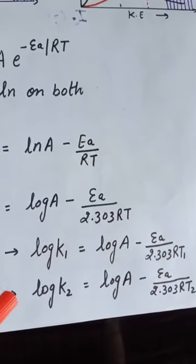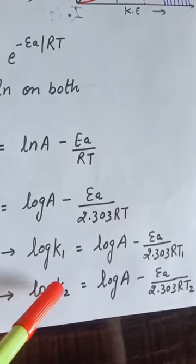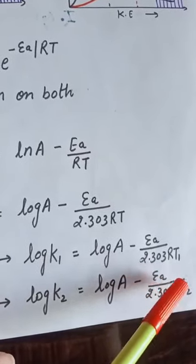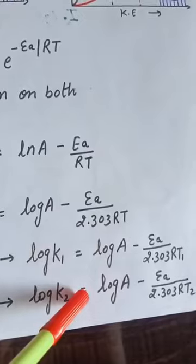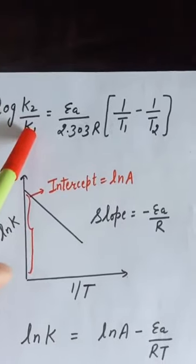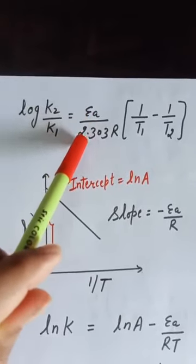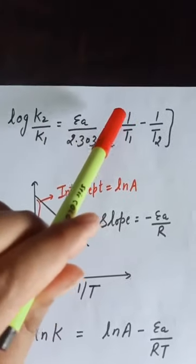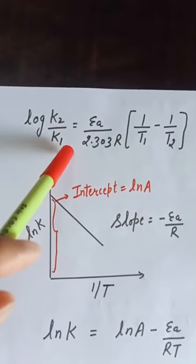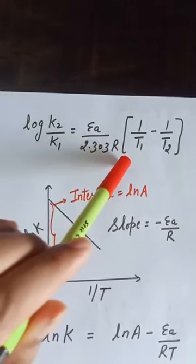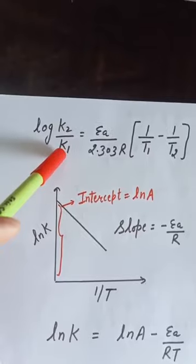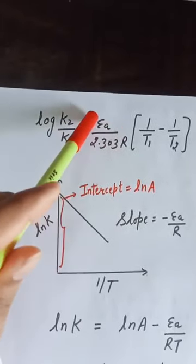Similarly, the equation at temperature T₂ gives log K₂ = log A − Ea/(2.303RT₂). Subtracting the equation at T₁ from the equation at T₂, the final equation becomes: log(K₂/K₁) = Ea/2.303R · (1/T₁ − 1/T₂). So, if the rate constants at two temperatures are given, we can easily calculate the activation energy for that particular reaction.